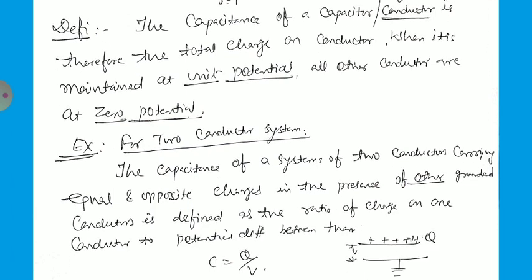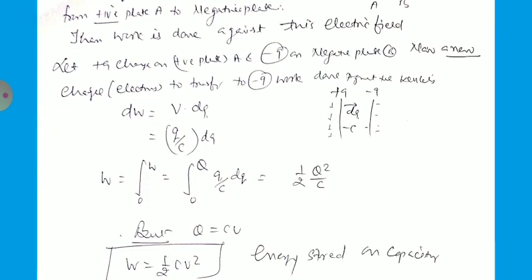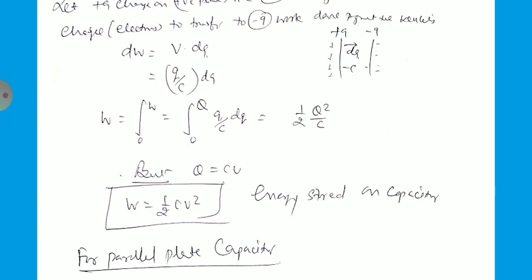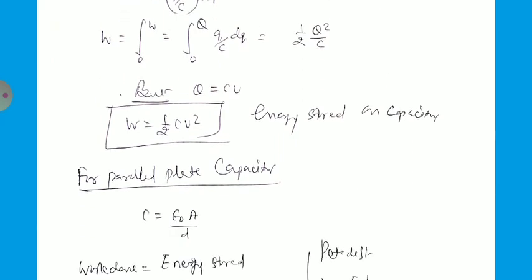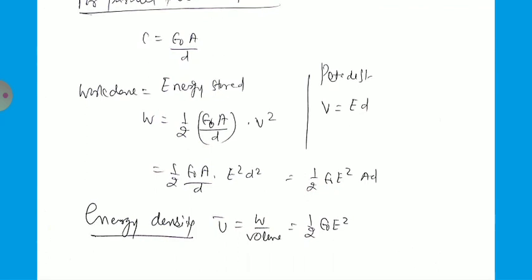For the two-conductor system, as calculated in UG classes, the capacitance of the system of two conductors carrying equal and opposite charges is defined as the ratio of charge to potential: C = Q/V. To determine the energy stored, dW = V dQ = (Q/C) dQ, so W = ∫₀^Q (Q/C) dQ = (1/2) Q²/C. Since Q = CV, we get W = (1/2) C V². For a parallel plate capacitor, C = ε₀ A/d. Substituting V = E·d, we obtain the energy density u = W/Volume = (1/2) ε₀ E², the same expression as calculated earlier. This is sufficient for today. Thank you.